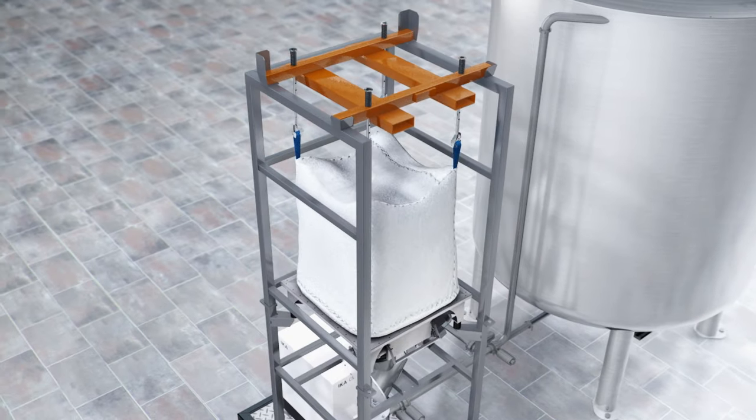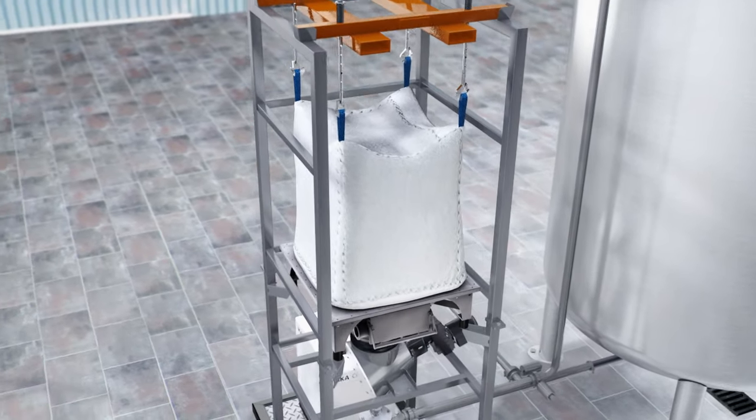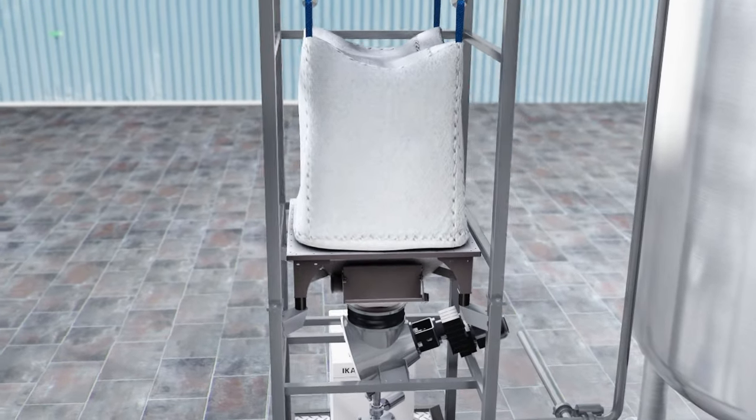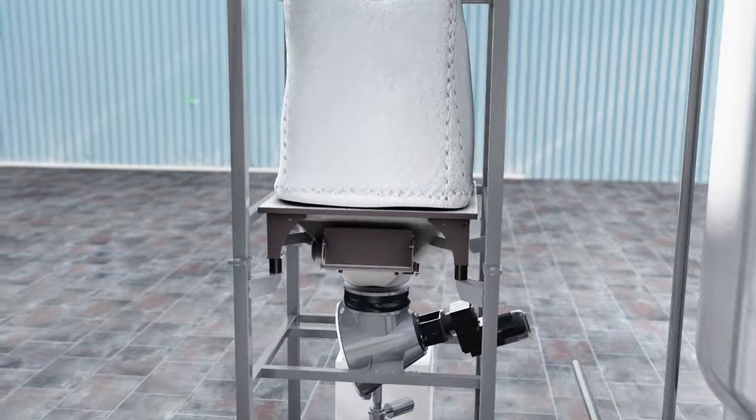The solids hopper, located above the CMX, is equipped with a bulk bag unloader. If the bulk material does not flow easily, a fluidization unit can be added.